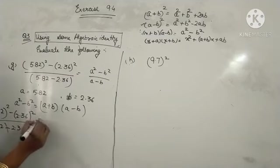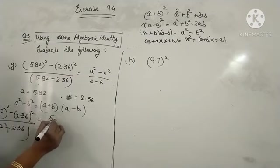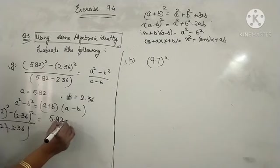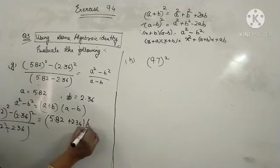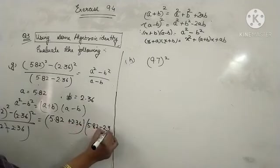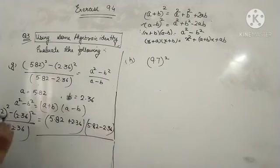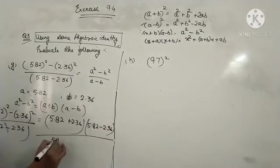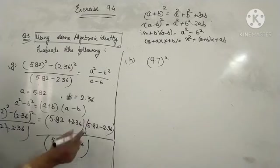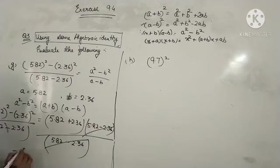It will be equal to A plus B, 5.82 plus 2.36, into A minus B, 5.82 minus 2.36. Whole formula, 5.82 minus 2.36. Now you can see that these both the terms are same, so they will cancel out. It will be equal to 5.82 plus 2.36. Add them.